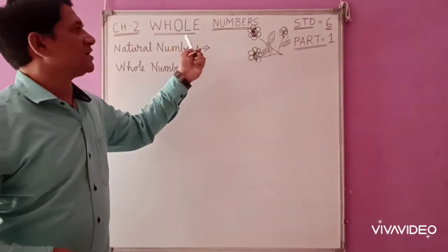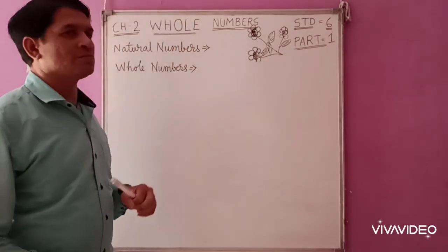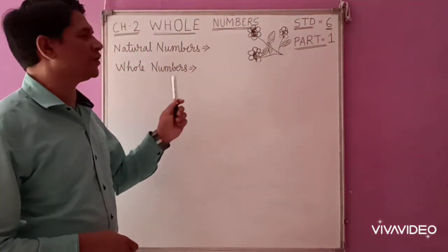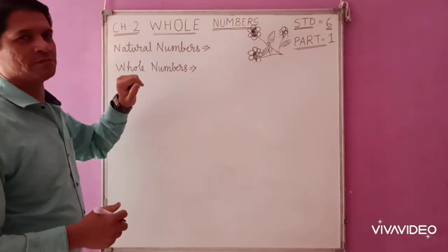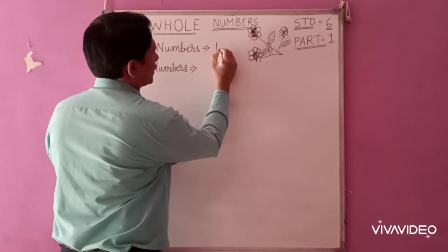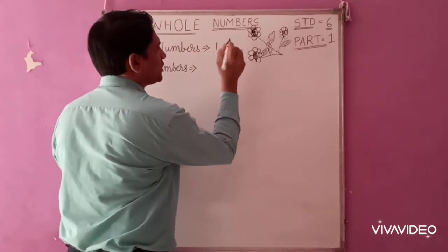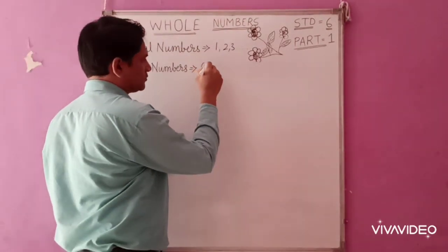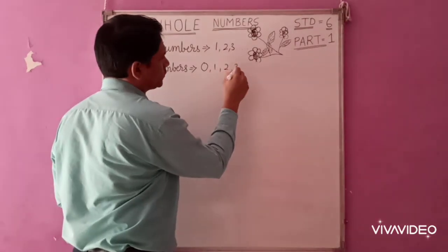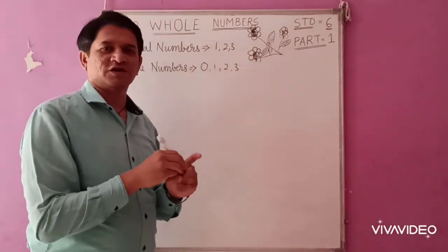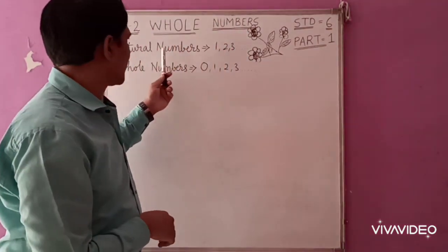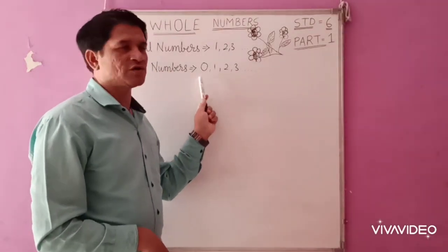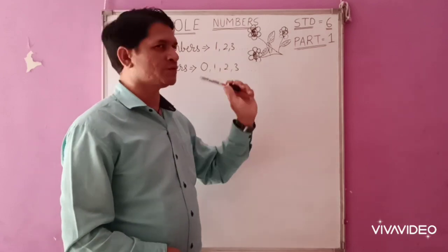The chapter name itself is whole numbers. So what do we mean by whole numbers? Natural numbers are the numbers starting from 1, 2, 3 up to infinity. Whole numbers are the numbers starting from 0, 1, 2, 3 up to infinity. Whole numbers start from 0, whereas natural numbers start from 1, 2, 3.